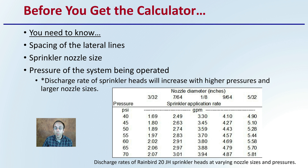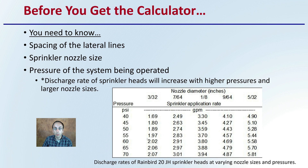The discharge rate of sprinkler heads will increase with higher pressure and larger nozzle size, as we see in some examples here. Increasing the nozzle size increases the gallons per minute, or the flow rate, as does increasing the pressure. If using the same nozzle size but increasing the pressure, there is an increase — though maybe not quite as great as changing the nozzle diameter — but there is definitely a fluctuation that will play into these calculations.